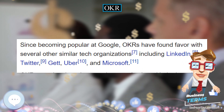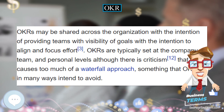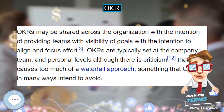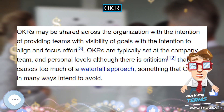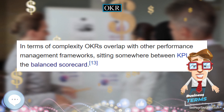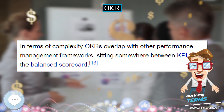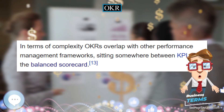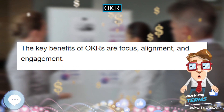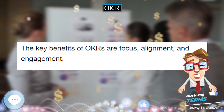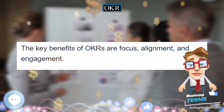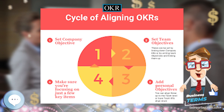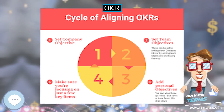History. In 1975, John Doerr, at the time a salesperson working for Intel, attended a course taught by Andy Grove where he was introduced to the theory of OKRs, then called iMBOs — Intel Management by Objectives. Doerr assembled the term OKR from Grove's lexicon.